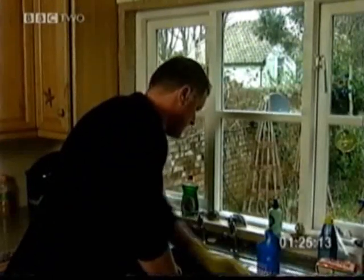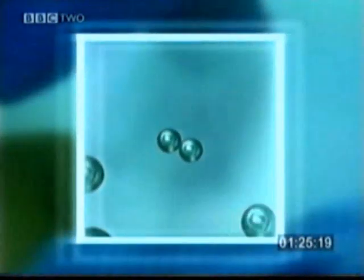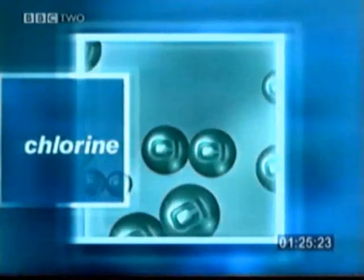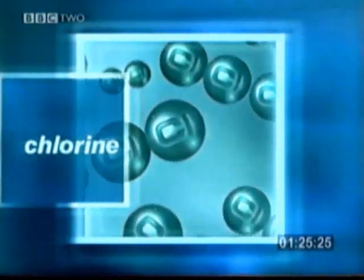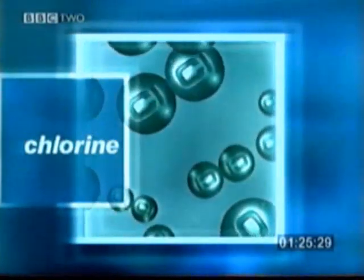Chlorine is used to make bleach found in many disinfectants. Chlorine is another example of a molecule made up of two atoms. Most of us are familiar with the distinctive smell of chlorine from the disinfectants in swimming pools.